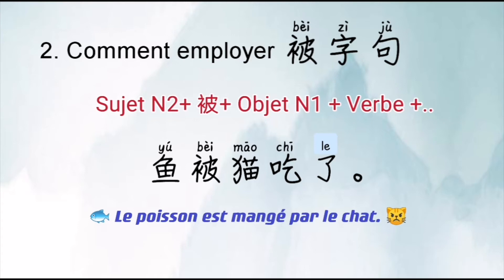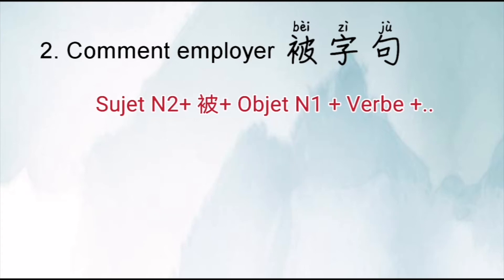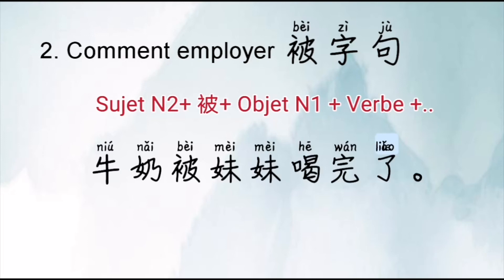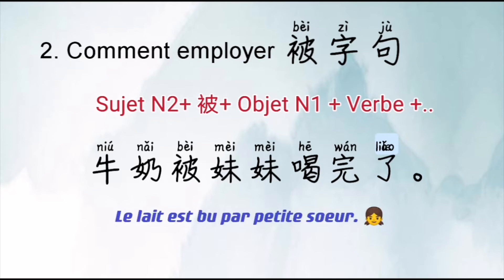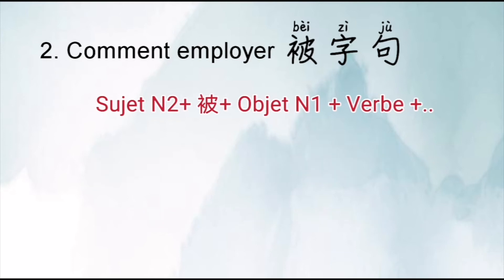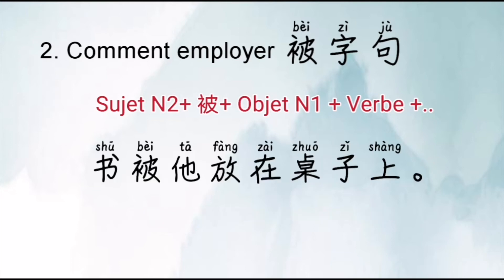Le même principe pour le deuxième exemple. Quand c'est passif, ça veut dire : le lait est bu par petite sœur. Pareil pour le troisième exemple — ça veut dire : le livre est posé par lui sur la table.